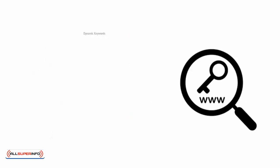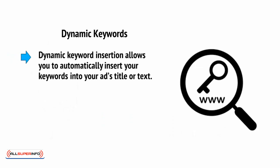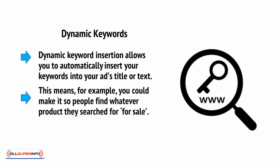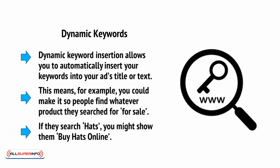Then there are dynamic keywords. Dynamic keyword insertion allows you to automatically insert your keywords into your ad's title or text. This means that, for example, you could make it so people find whatever product they search for listed for sale, or if they search 'hats,' you might show them 'buy hats online.'